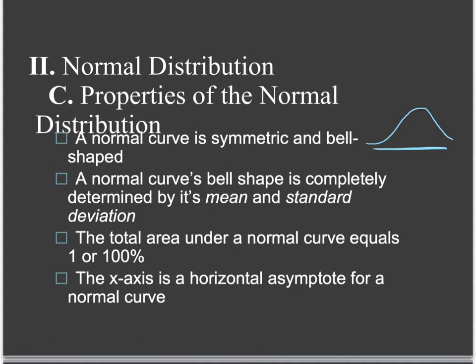The x-axis — that horizontal axis — acts as a horizontal asymptote for the normal curve. The word asymptote just means the curve gets really, really close to it. You can see here how it's getting closer and closer to the line drawn at the bottom — that's the x-axis. The curve gets closer and closer to that line, but it never ever touches it. That's what it means to be an asymptote.